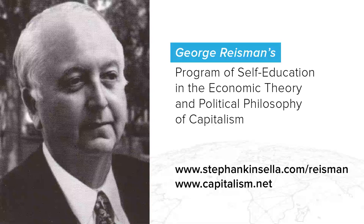To summarize our discussion of the free market thus far: the desire of businessmen to earn profits and avoid losses, and to earn higher profits in preference to lower profits, brings about a tendency toward a uniform rate of profit on capital invested in all the different branches of industry. The operation of this tendency counteracts, delimits, and largely prevents mistakes from being made in the relative production of various goods. Because of it, consumers have the power of positive initiative to shift the course of production simply by changing the pattern of their spending. Because of the profit motive, businessmen are made to act virtually as the consumers' agents.